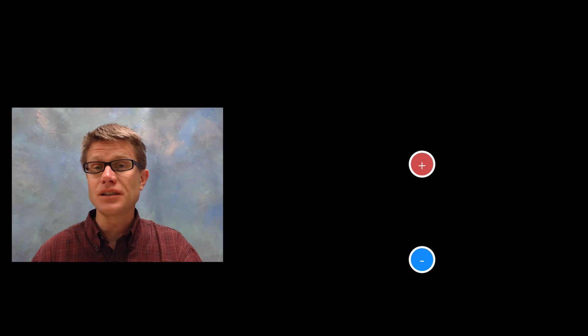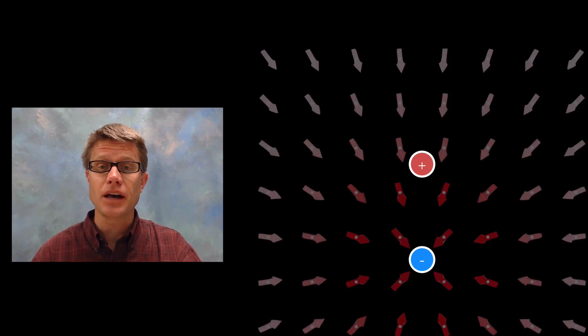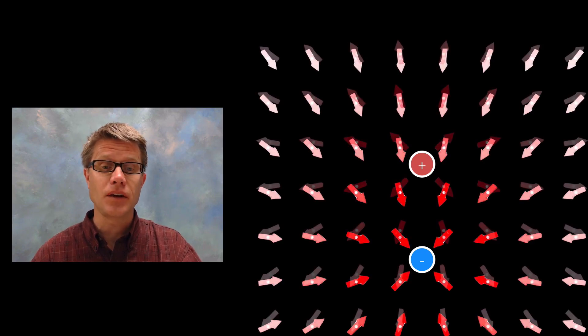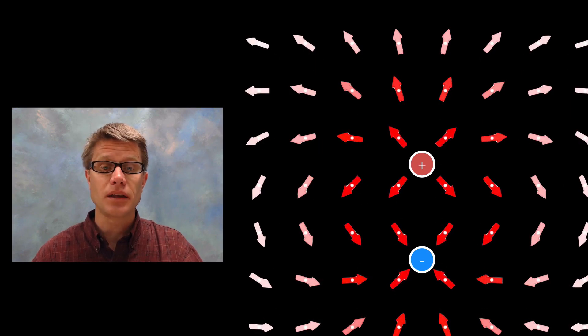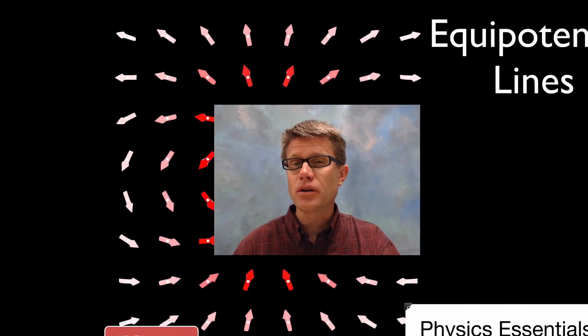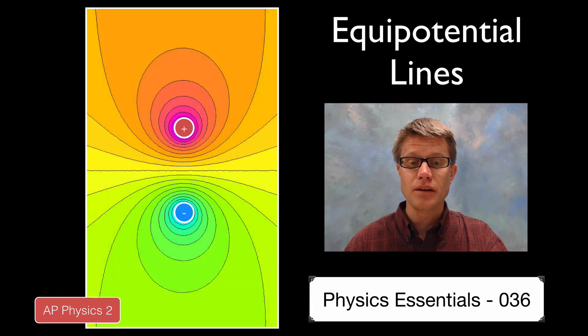What if we had a positive and a negative charge? Well we would have to combine that of the negative and the positive — you would have to do a little bit of vector addition. But we would get electric field lines that would look like this. The equipotential lines are going to be a little more difficult to draw, and they would look something like that.